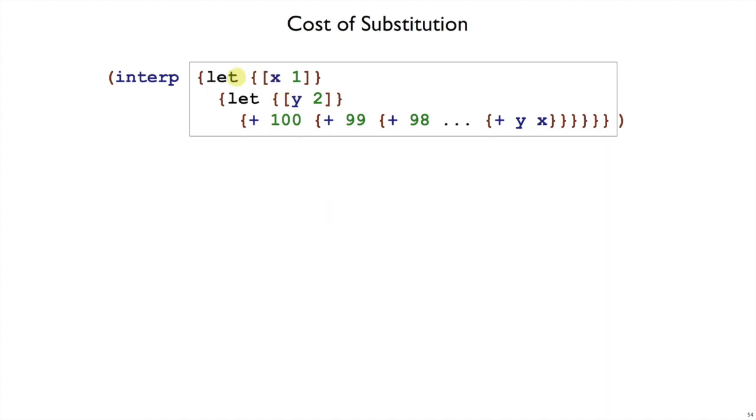Suppose we have an expression like this: let x be 1 and let y be 2, and we have this big plus expression. We have 100 things added together, and at the end is y and x.